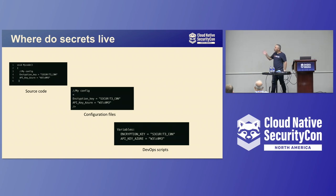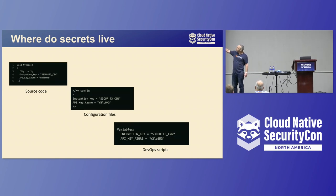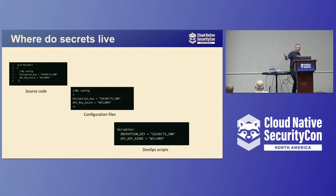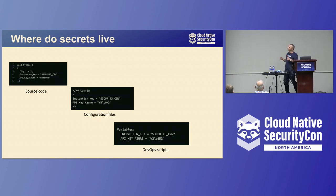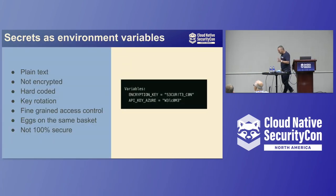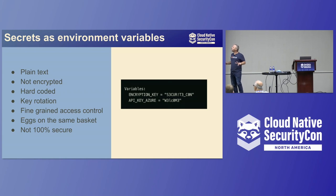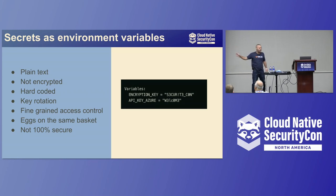Now let's look at where we normally see secrets. This is a really bad example because the secrets are in plain text — but I have a reason for doing that. We normally see secrets in source code when we want to develop an application and access a specific resource, in configuration files when managing infrastructure, and in DevOps scripts and CI/CD pipelines — usually declared as a variable or a variable type of secrets. Since this is a DevOps-oriented talk, I want to focus on secrets as environment variables. This is one of the most common ways to store secrets in a DevOps platform.